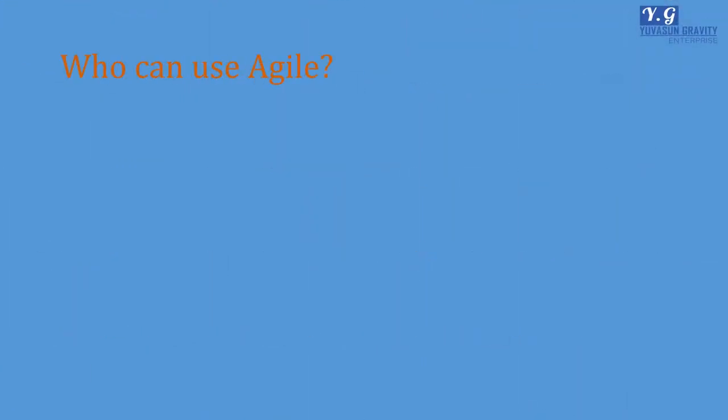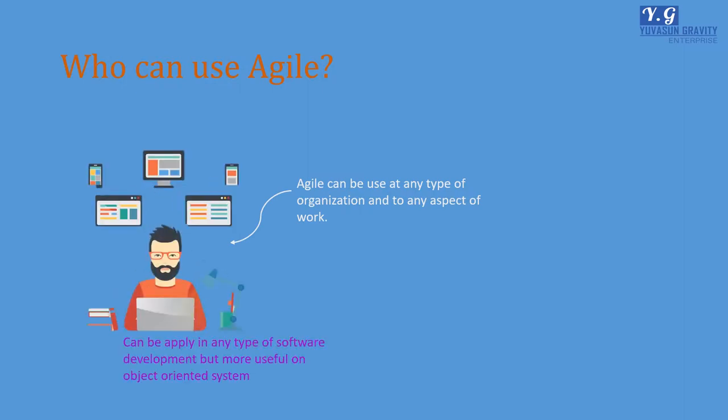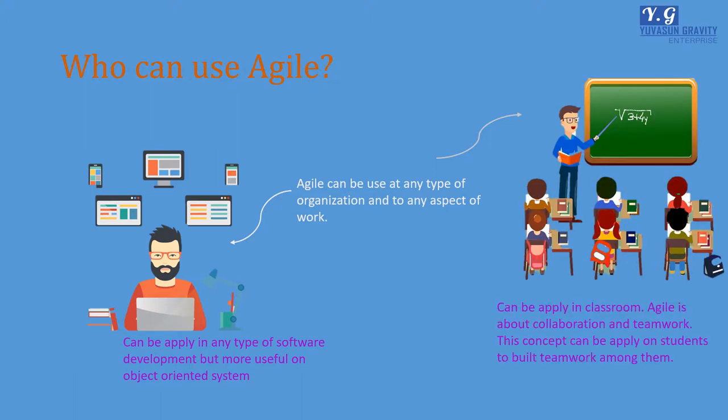Who can use Agile? Agile can be used in any type of organization and for any aspect of work. It can be applied in any type of software development but is more useful on object-oriented systems. It can also be applied in a classroom. Agile is about collaboration and teamwork. This concept can be applied to students to build teamwork among them.